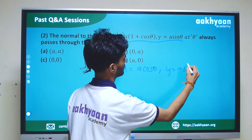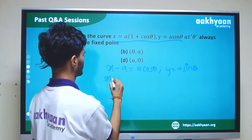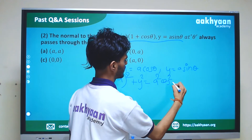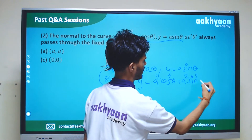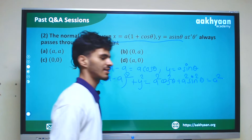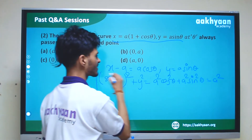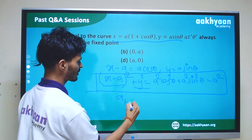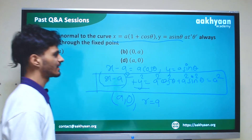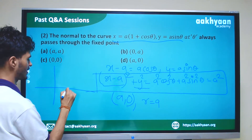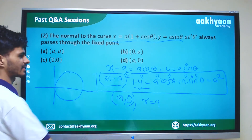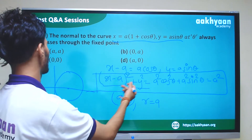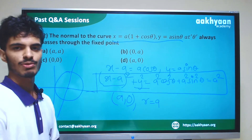For the parametric equations x = a·cosθ and y = a·sinθ, we get x² + y² = a²cos²θ + a²sin²θ = a²(sin²θ + cos²θ) = a². This is the equation of a circle passing through center (a, 0) with radius equal to a.